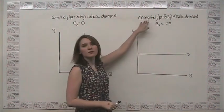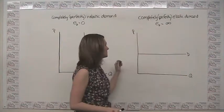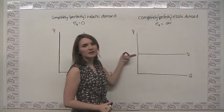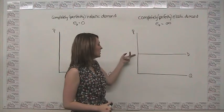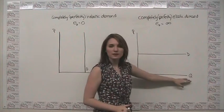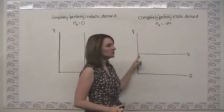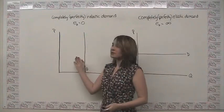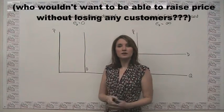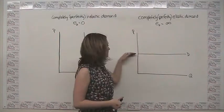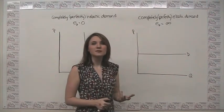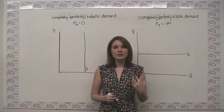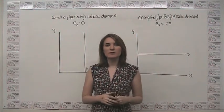On the other hand, we could have what we call completely or perfectly elastic demand. Here, our elasticity of demand is infinite. Even an infinitesimally small change in price causes our quantity to go from very, very large to zero. These are the two extremes — theoretical constructs that don't happen very much in nature, but we can think of them as the limiting cases of inelastic versus elastic.